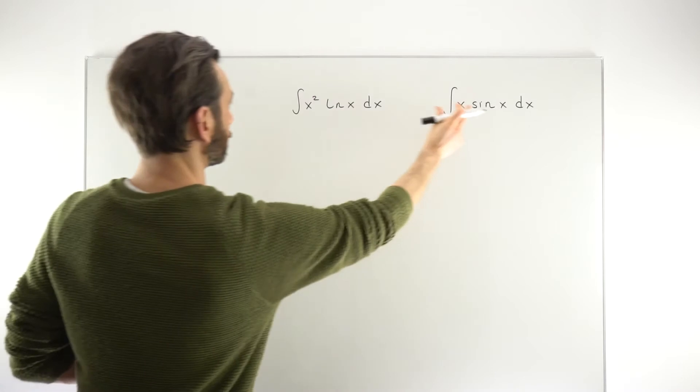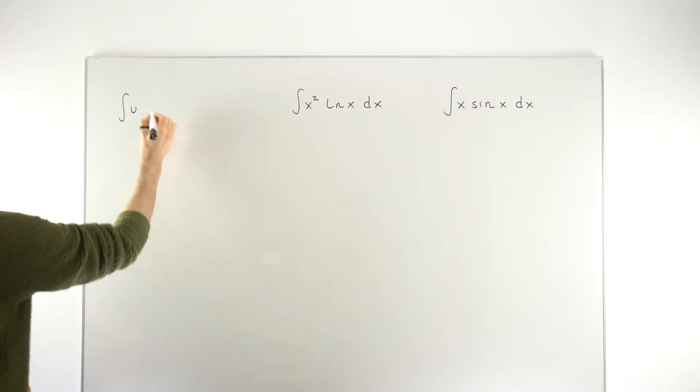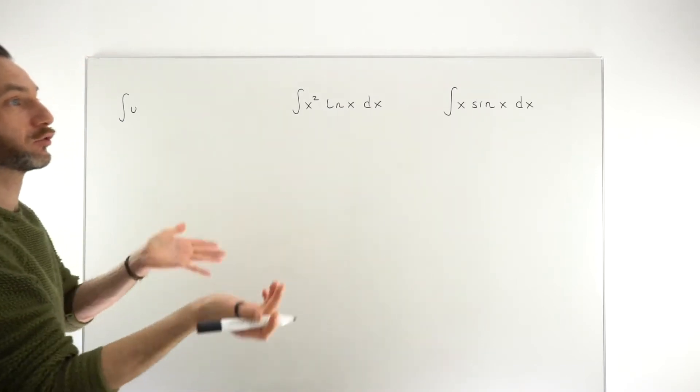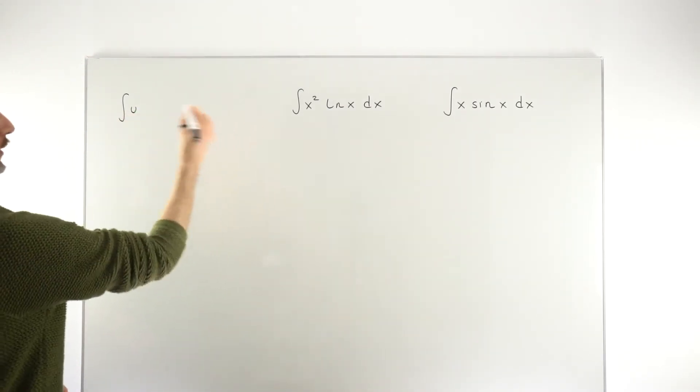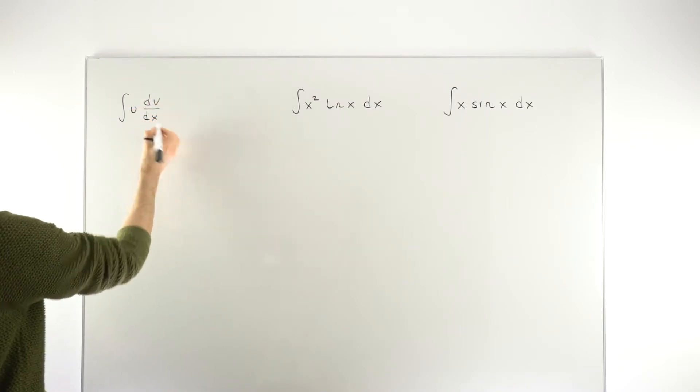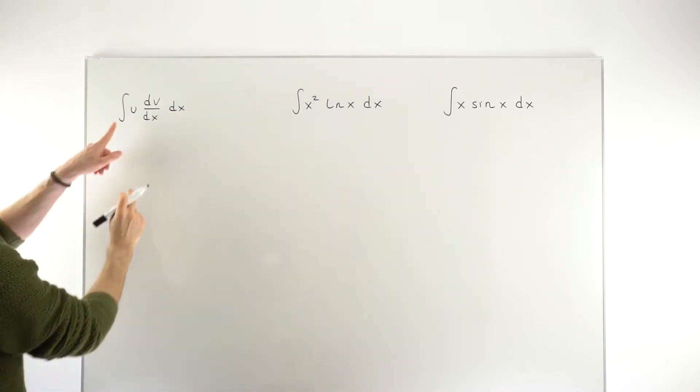We know that it's a product of functions, but the way they're written in the general rule, the result is u as the first function. And the second function is not just a function, but actually the derivative of some function. So the second function in your product has to be written as dv/dx. And you're integrating all of this with respect to x, so dx.